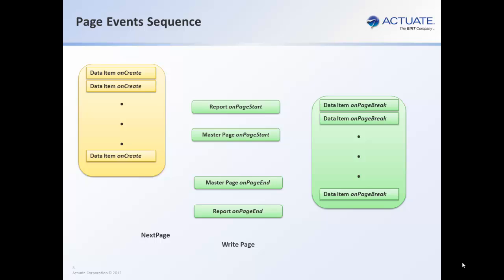Page level events fire for each page created when using two tasks — run then render — to create a report. The following slide shows a sequence of events.